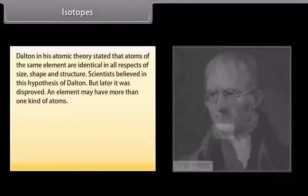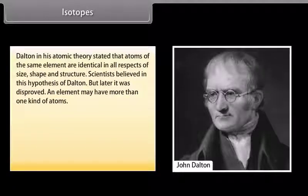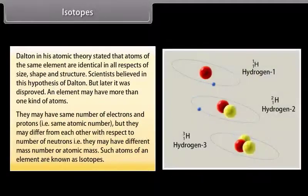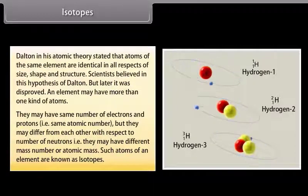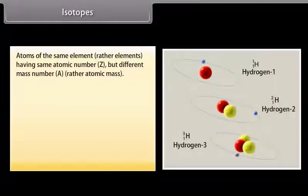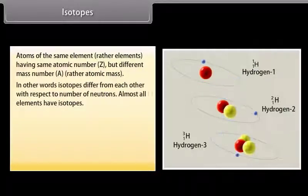Dalton in his atomic theory stated that atoms of the same element are identical in all respects of size, shape, and structure. Scientists believed this hypothesis, but later it was disproved. An element may have more than one kind of atom — they may have the same number of electrons and protons, that is, the same atomic number, but may differ in number of neutrons, that is, they may have different mass numbers. Such atoms of an element are known as isotopes: atoms of the same element having the same atomic number Z but different mass number A. Almost all elements have isotopes.